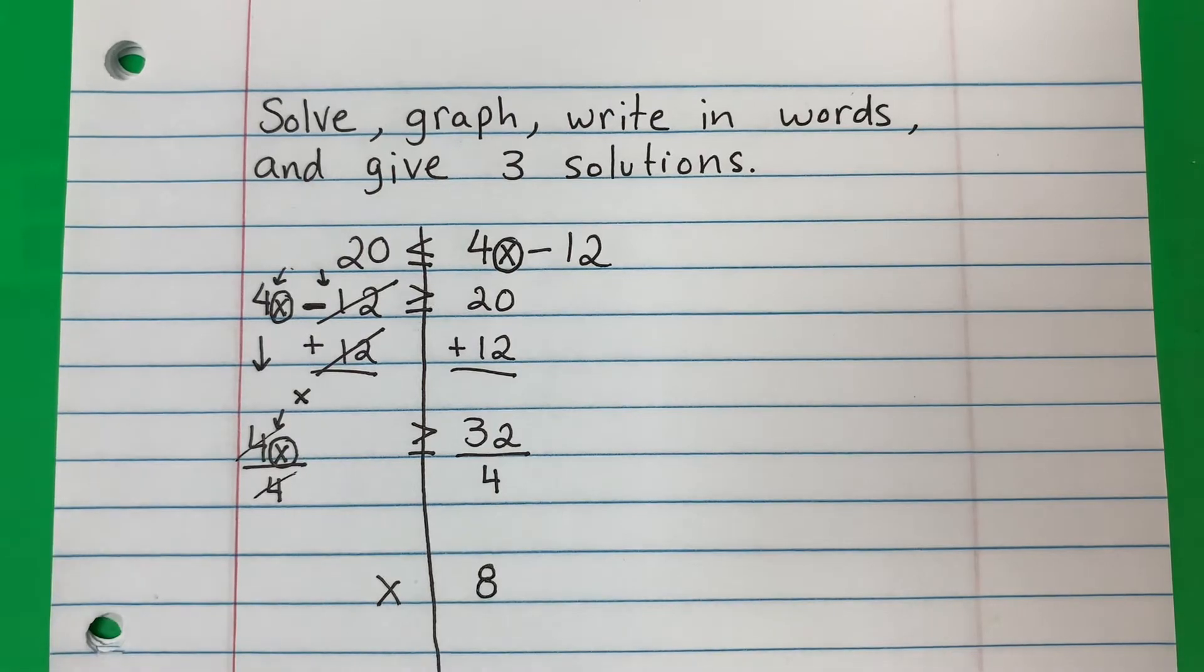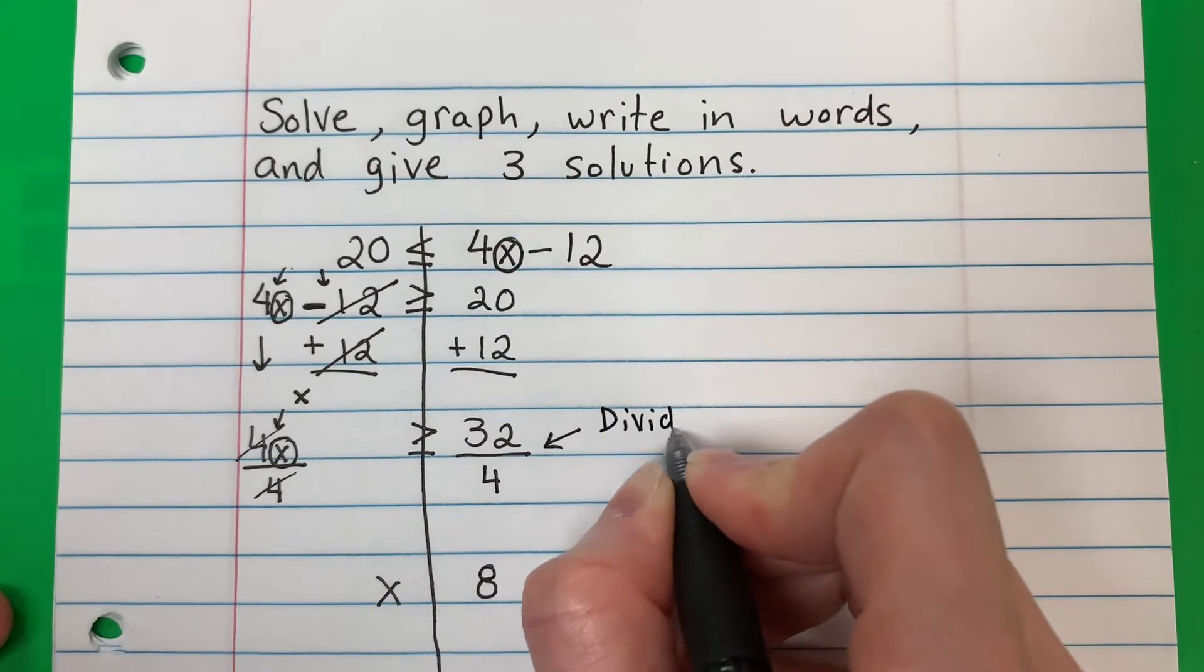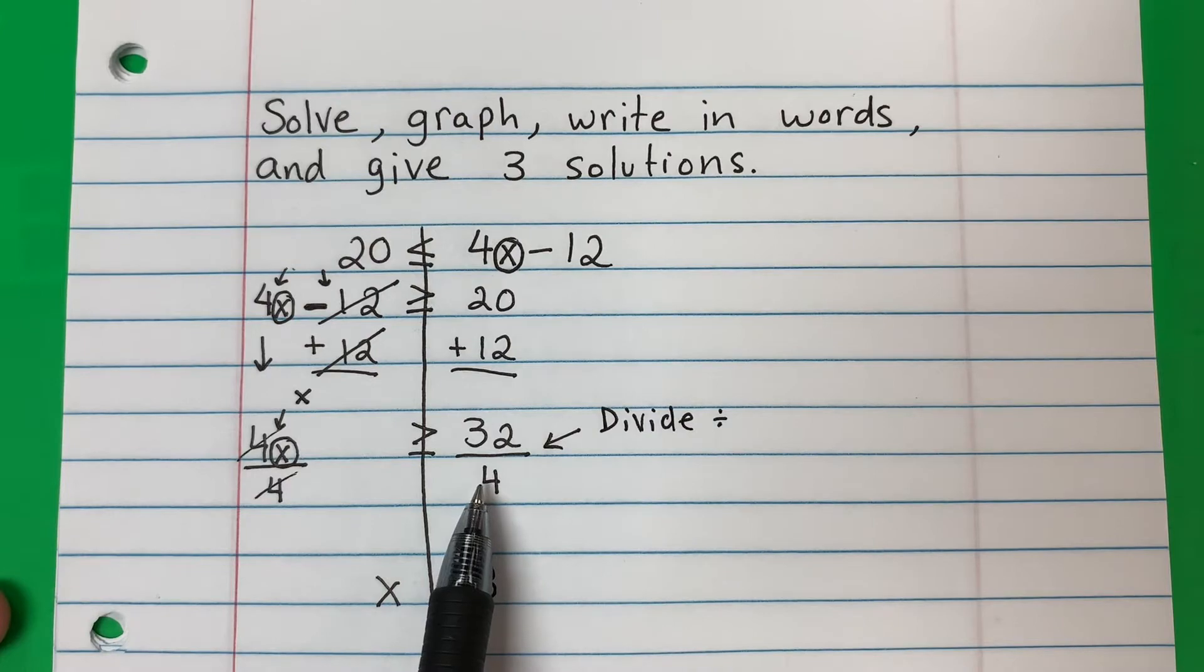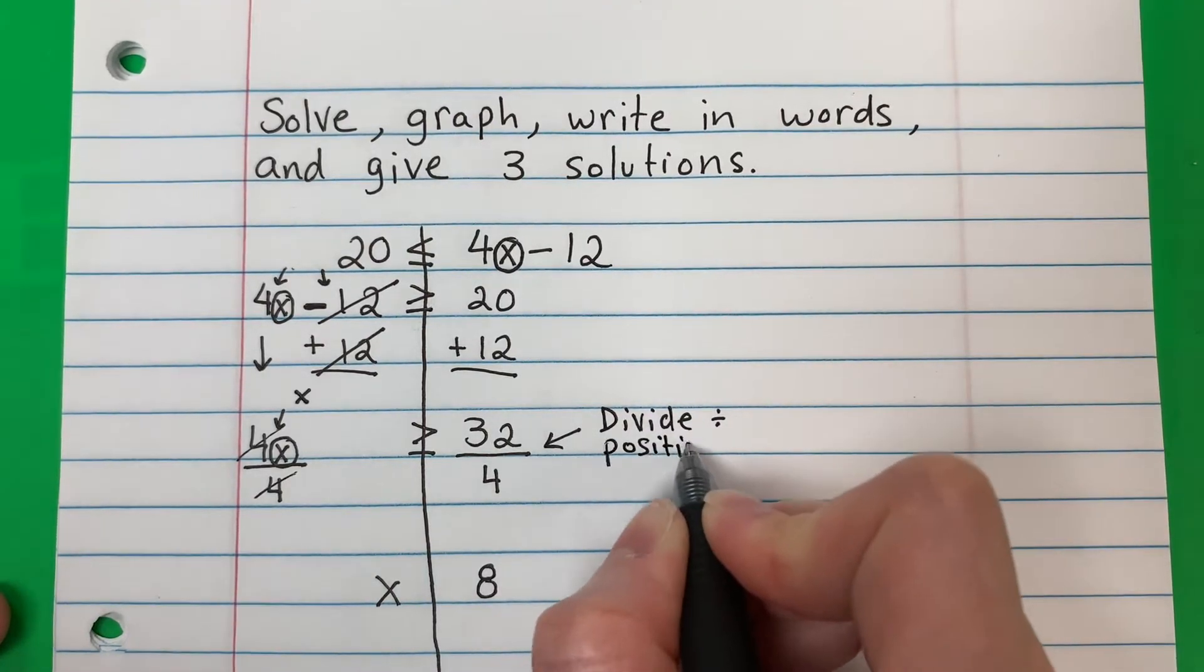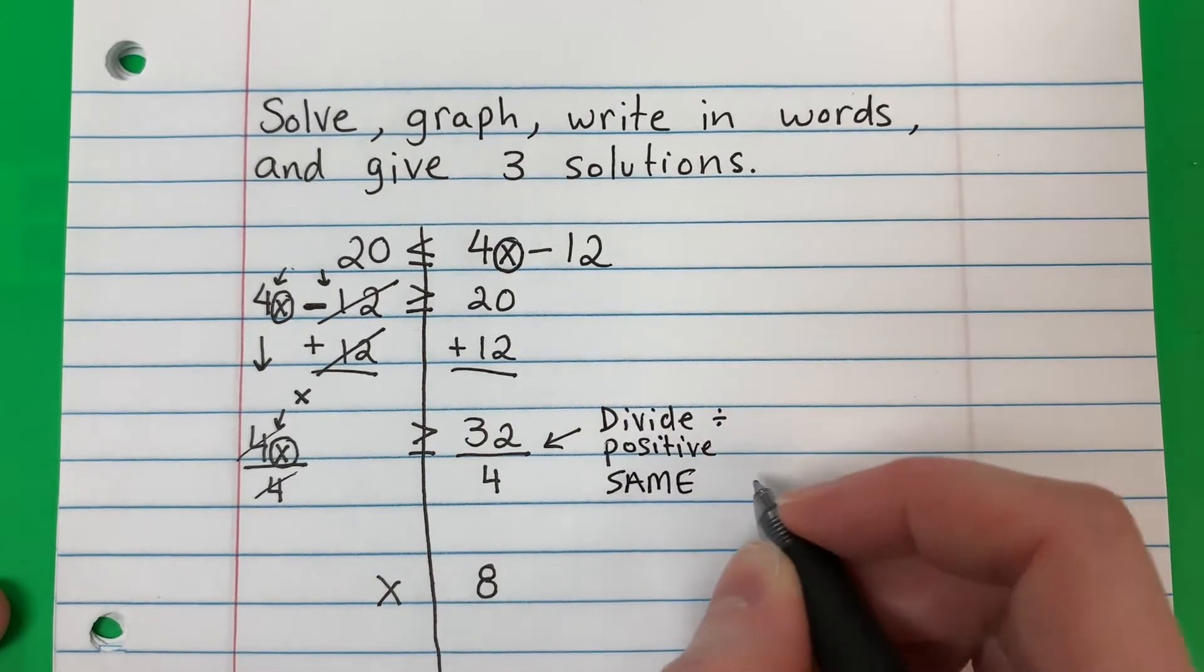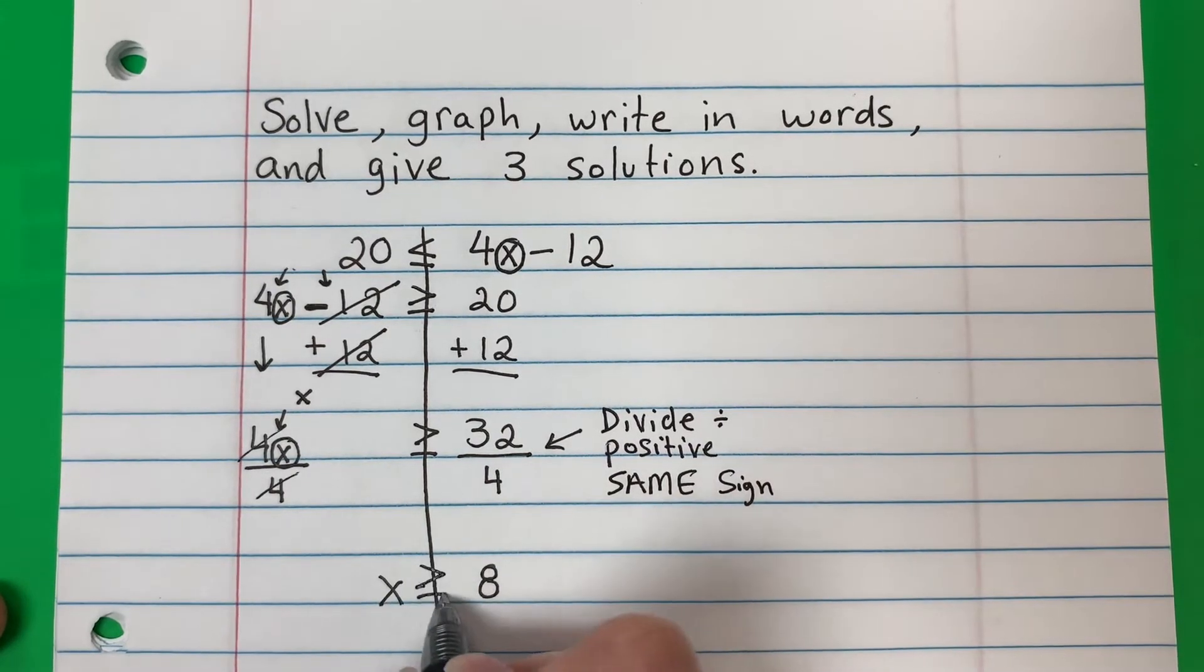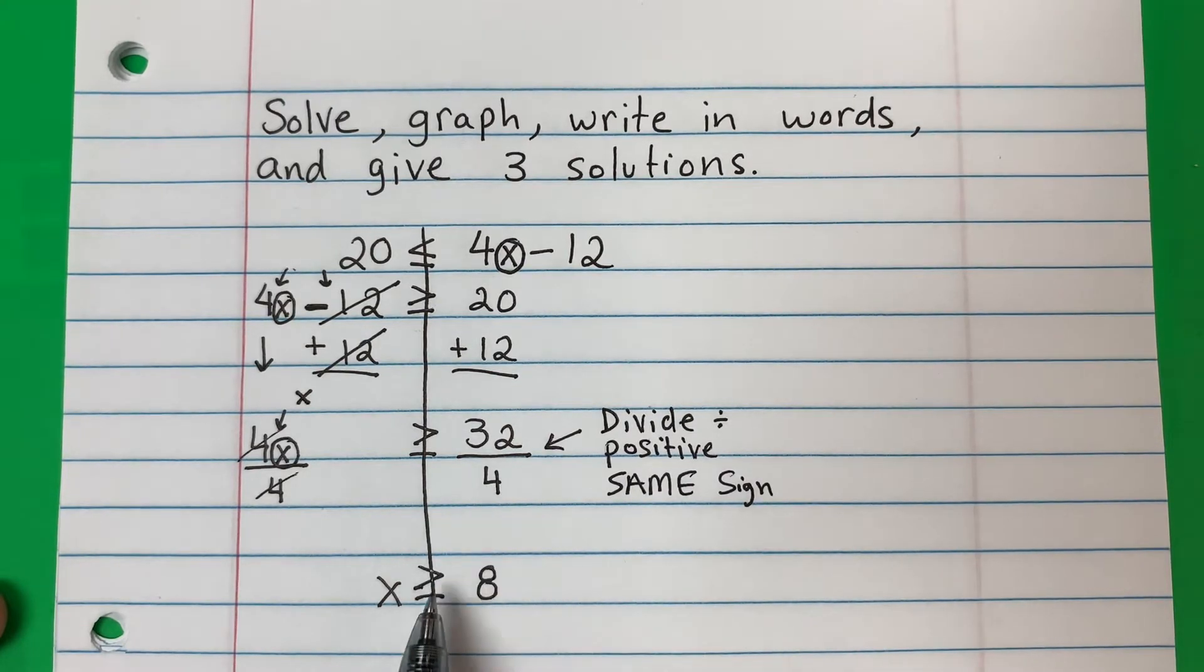Okay, now the sign. Here I did a divide. Look at the number down. 4. Positive 4. If it's positive, you're going to do the same sign. Okay, so I'm going to go ahead and do greater than or equal. So positive number down, same. Okay, if it's negative, you change.